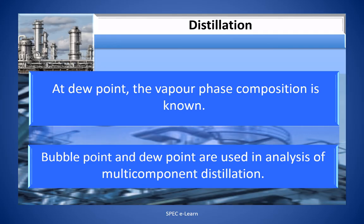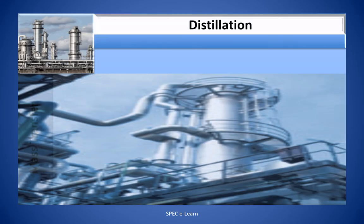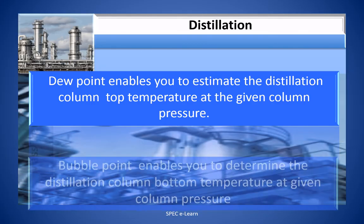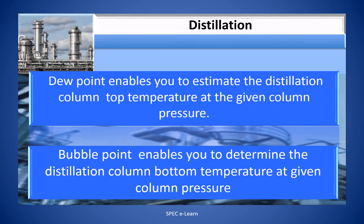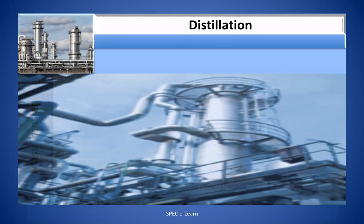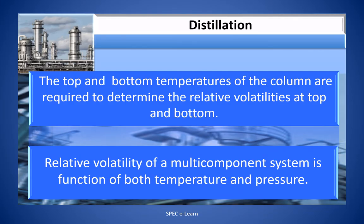Bubble point and dew point are used in the analysis of multi-component distillation. Dew point enables you to estimate the distillation column top temperature at a given column pressure. Bubble point enables you to determine the distillation column bottom temperature at a given column pressure. The top and bottom temperatures of the column are required to determine the relative volatilities at the top and bottom. Relative volatility of a multi-component system is a function of both temperature and pressure.